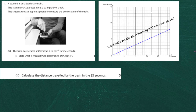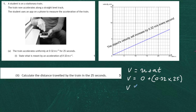Question 1, Part A, Part 2: calculate the distance traveled by the train in 25 seconds. There are two ways to do this — using kinematic equations or using the graph. The graph starts at zero and rises to some speed at 25 seconds. We find that final speed using v = u + at, where u = 0 and a = 0.32, giving v = 0.32 × 25 = 8 meters per second.